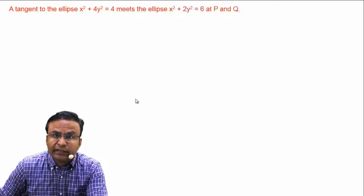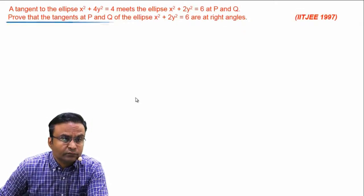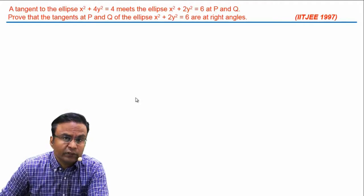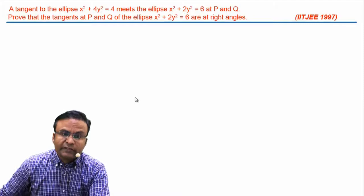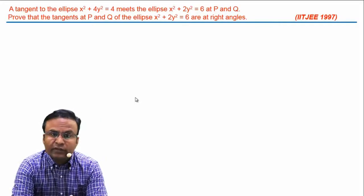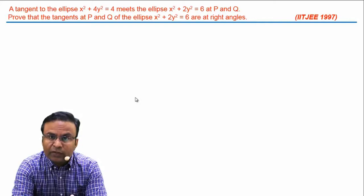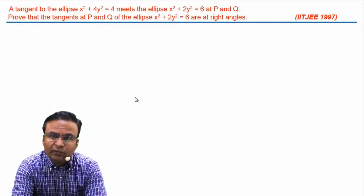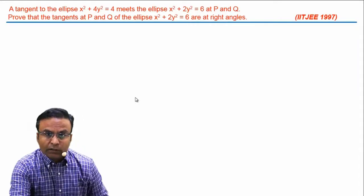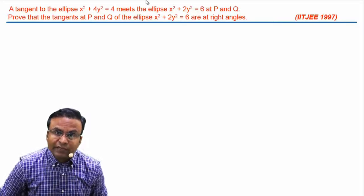Let's try one of the best questions in director circle, which was asked in JEE 1997. The question is: a tangent to ellipse x² + 4y² = 4 meets the ellipse x² + 2y² = 6 at points P and Q. We have to prove that tangents at P and Q to the second ellipse are at right angles. When tangents to any ellipse are perpendicular, the concept of director circle is directly involved. We will solve this using the director circle concept.